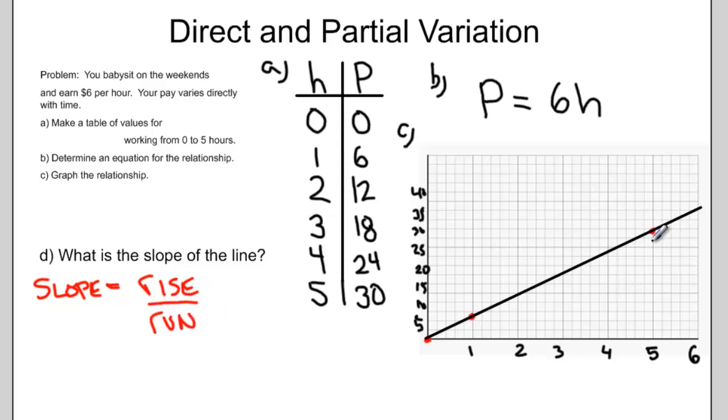So here my rise is 30, my run is 5. So my slope would reduce to 6.